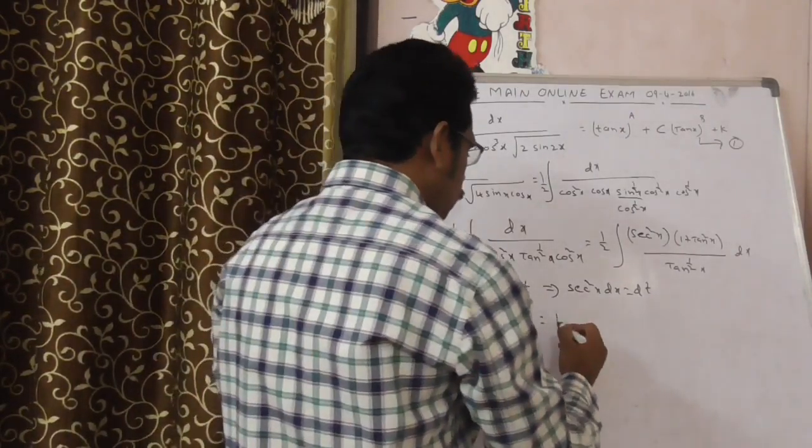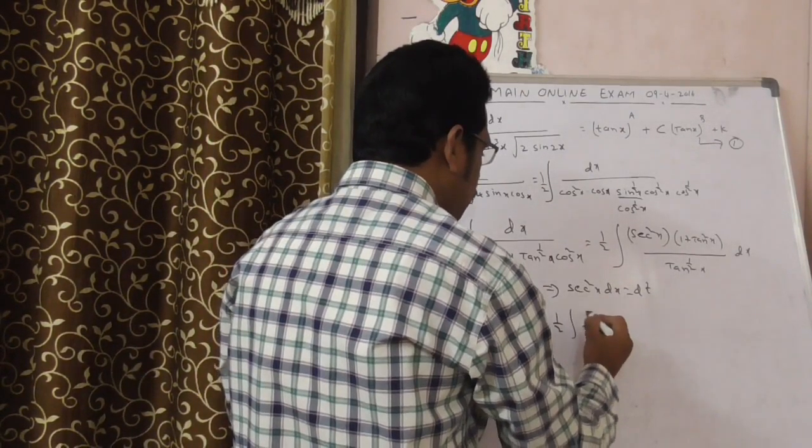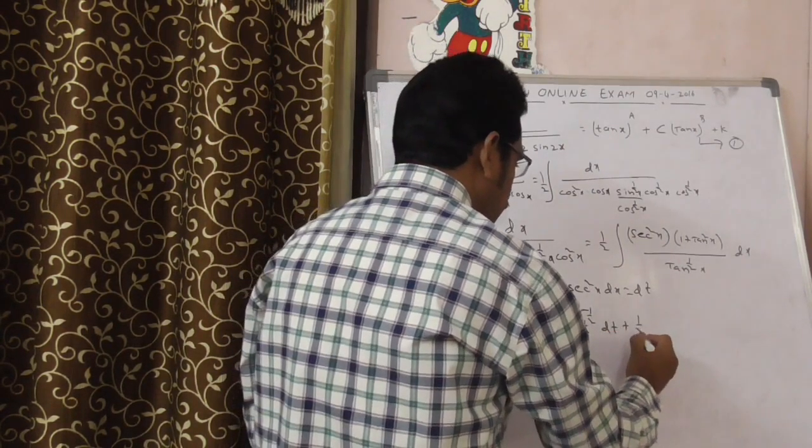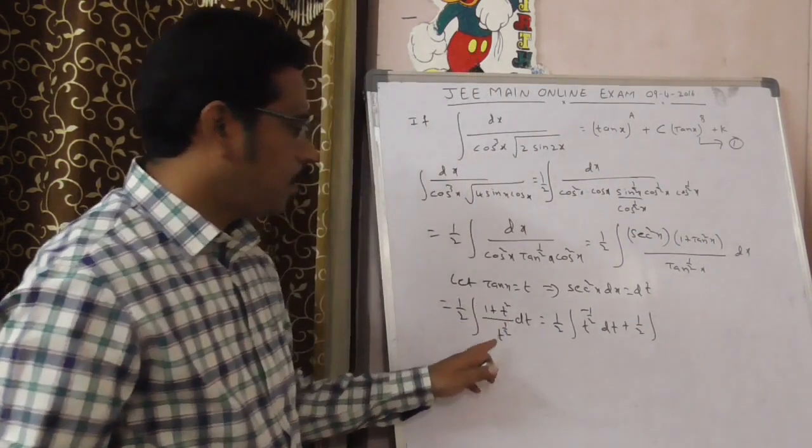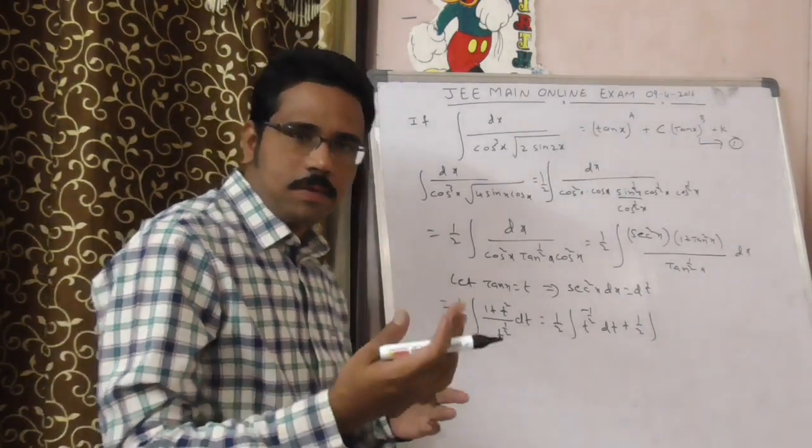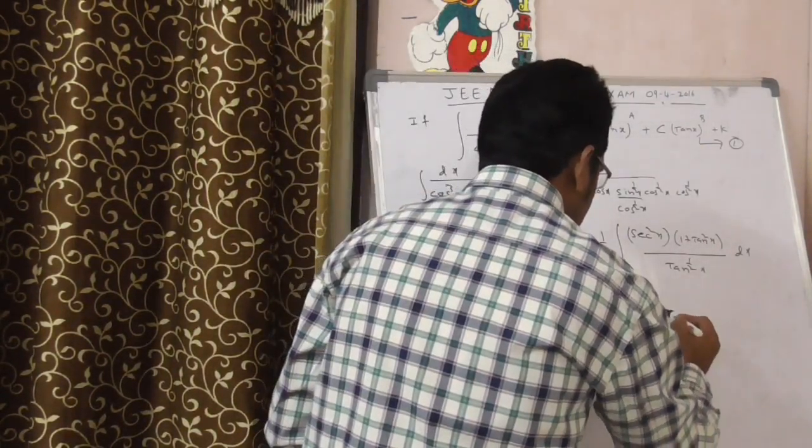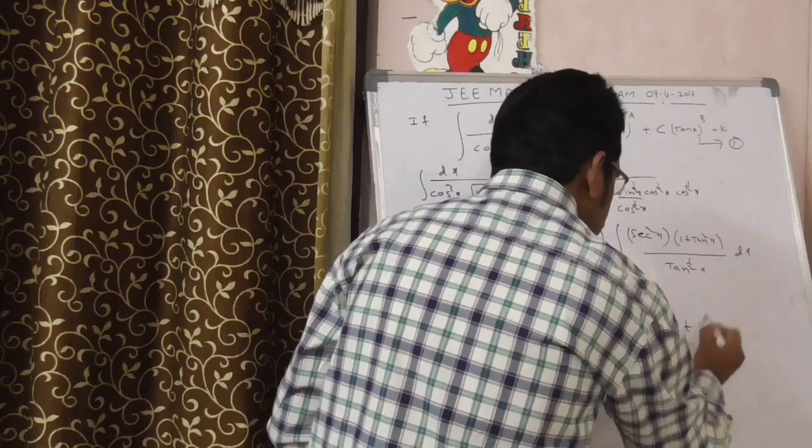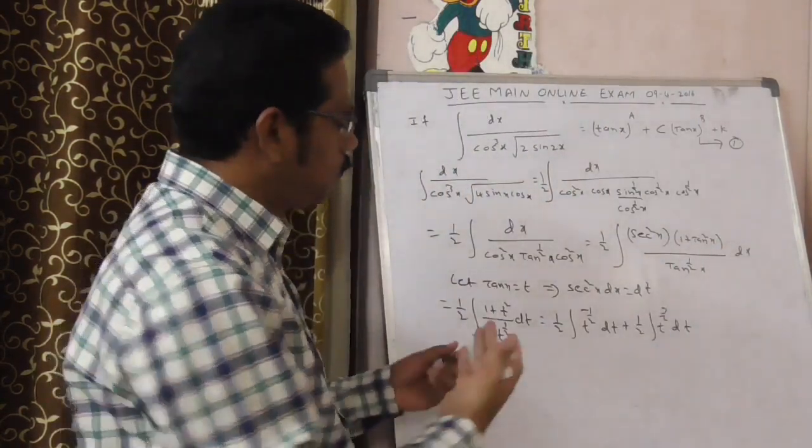Very good. Now, 1 by 2 integral t power minus 1 by 2 dt plus 1 by 2 integral t square by t power 1 by 2. What is t square by t power 1 by 2? That is t to the power 3 by 2 dt. Good, simple.